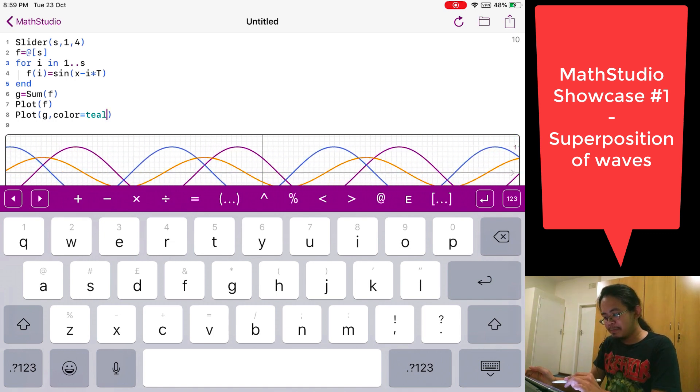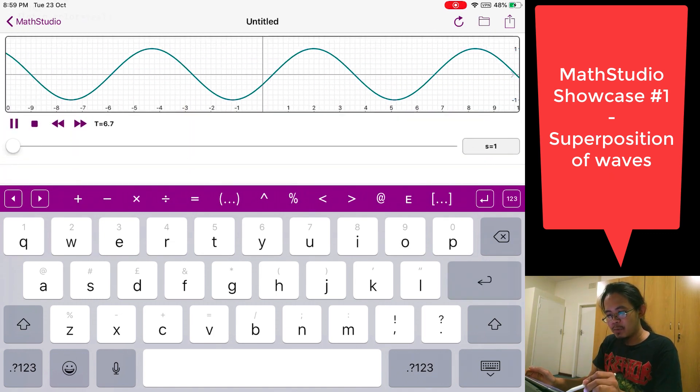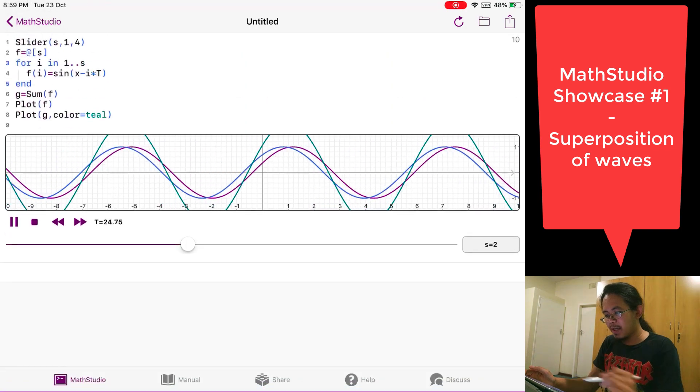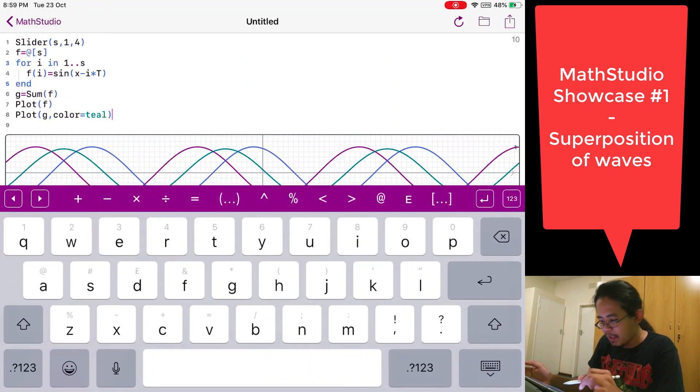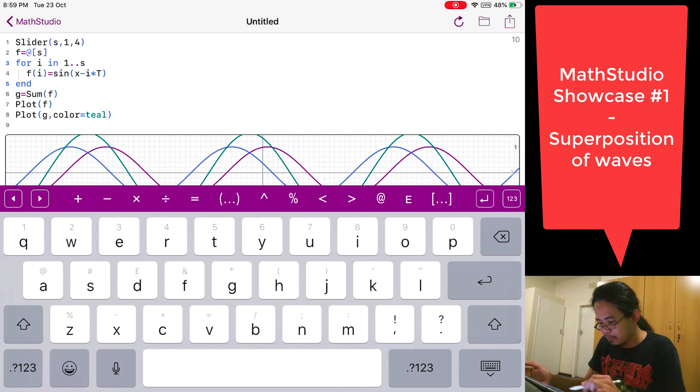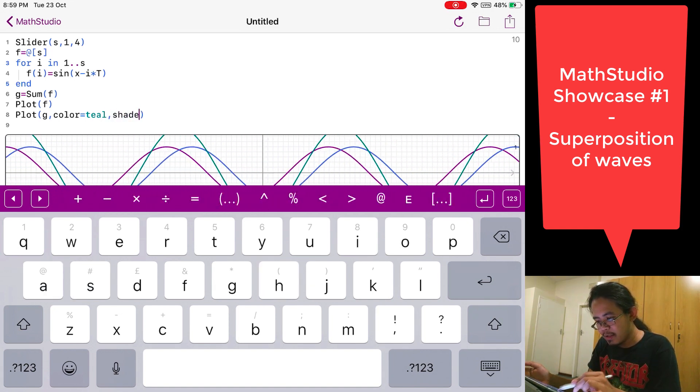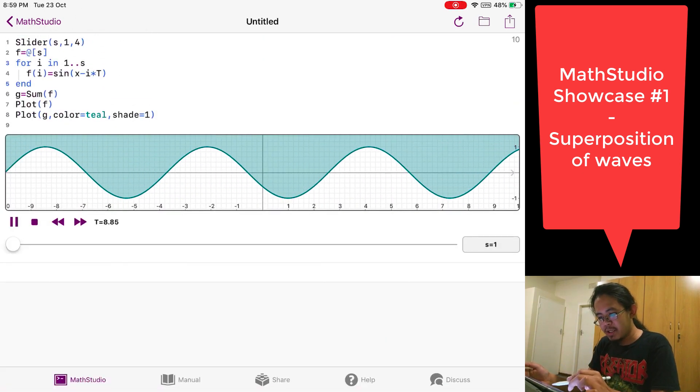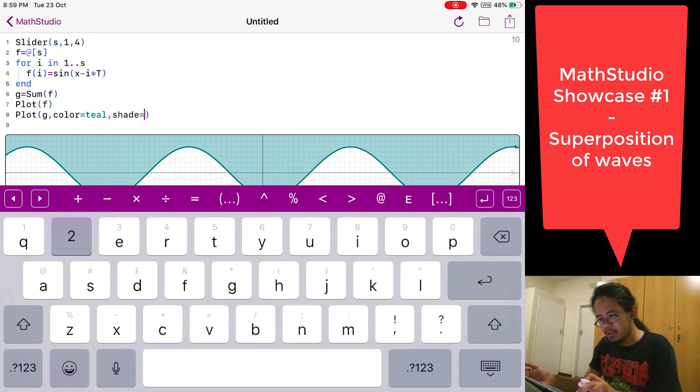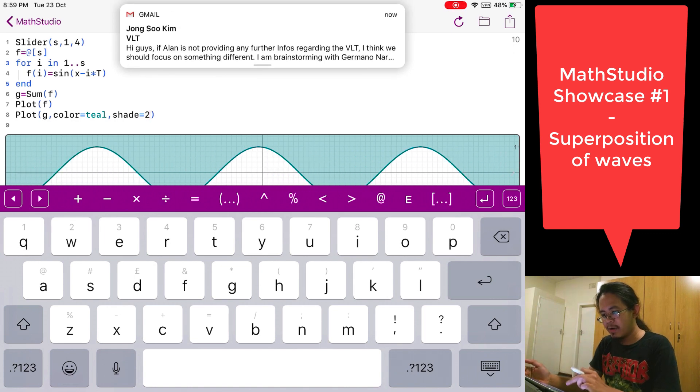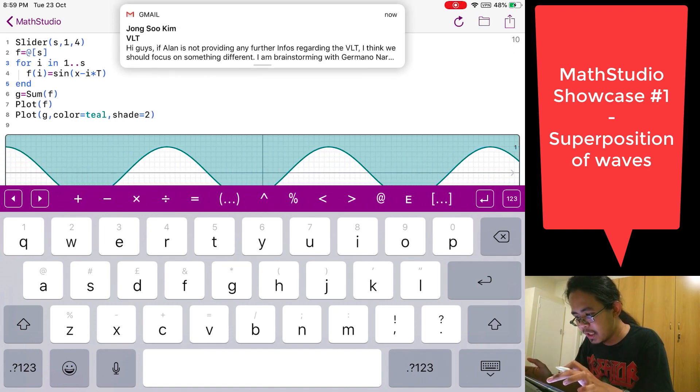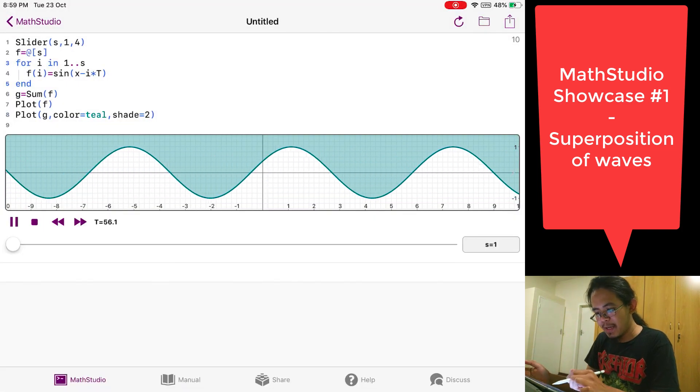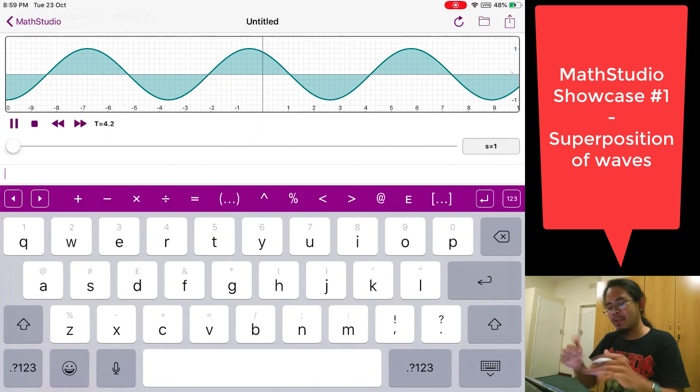And to make it even better, let's put a shade in our teal sum plot. So you do shade. Is it shade equals one? I know shade equals one is putting a shade above. How about shade equals two? So I'm not sure what this does. Hopefully shade equals two is like inside the graph. Let's press enter here. Now it's inside. So that's what we want.